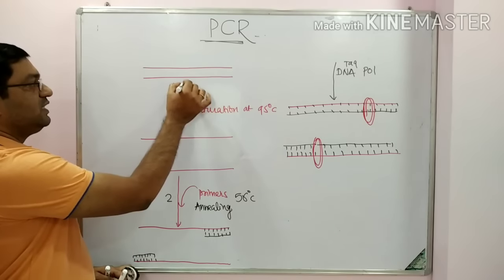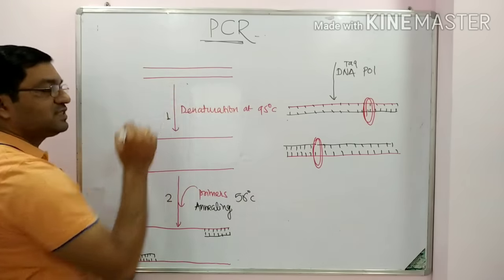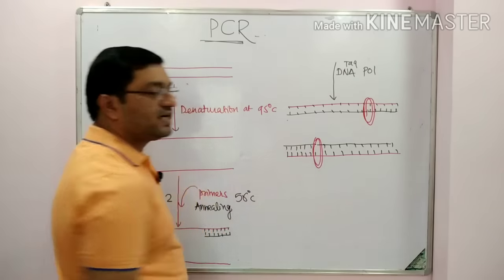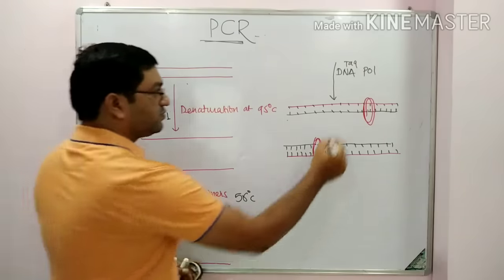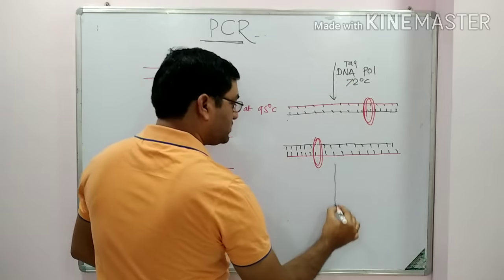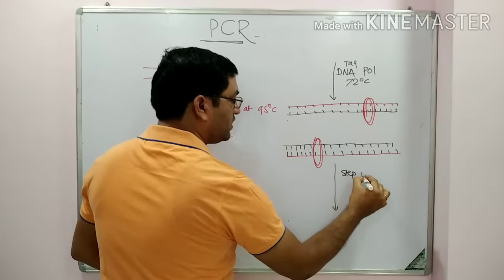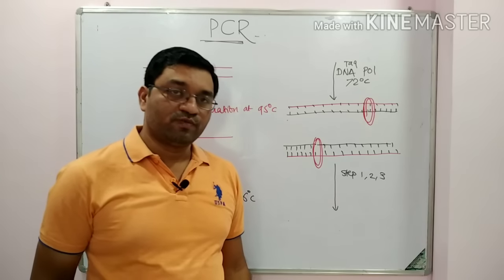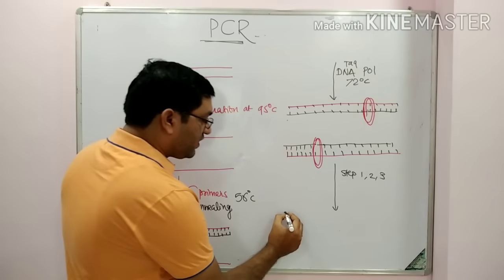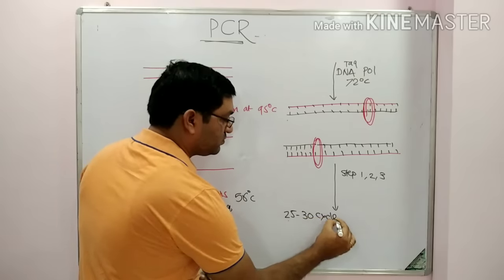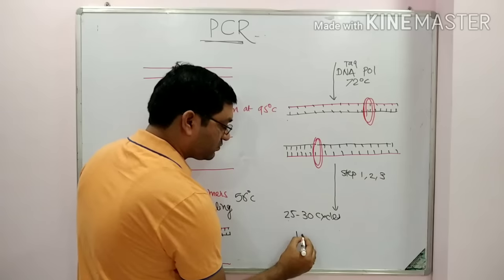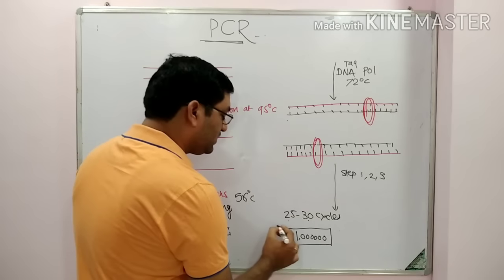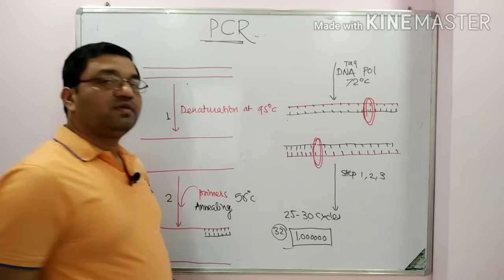From one DNA molecule, you will get two DNA molecules. From two strands, you will get four strands of DNA molecule. This extension occurs at 72 degrees centigrade. Steps 1, 2, and 3 are repeated again and again to produce multiple copies — millions of DNA molecules. Approximately 25 to 30 cycles are needed to produce one million copies. Approximately 32 cycles are needed to produce one million DNA molecules.